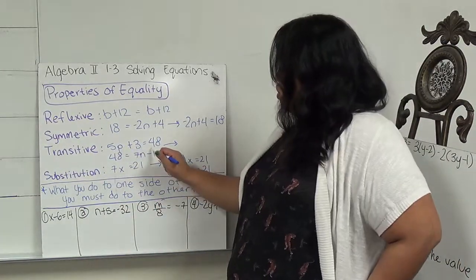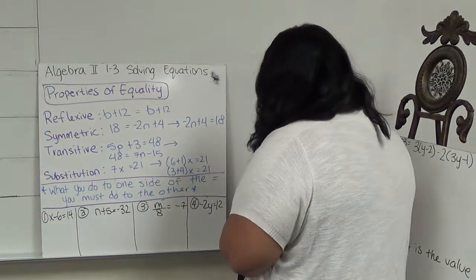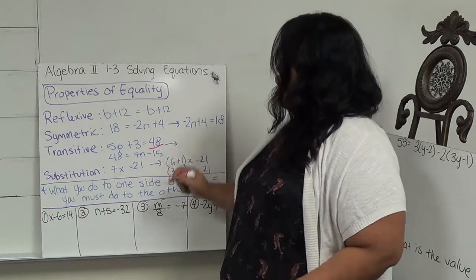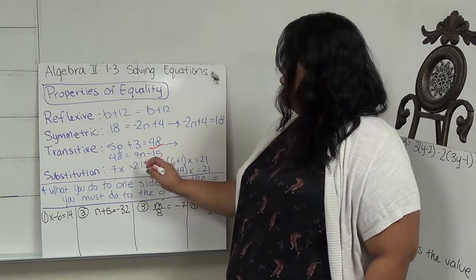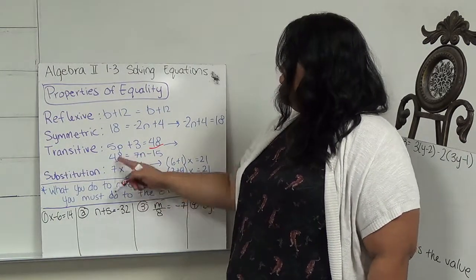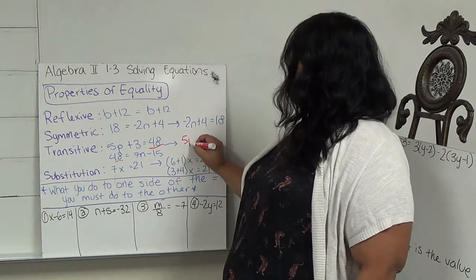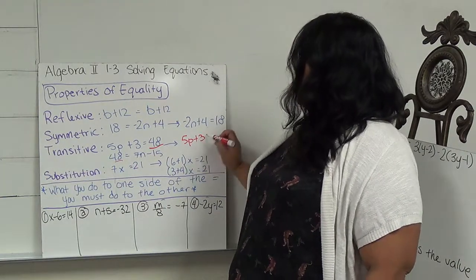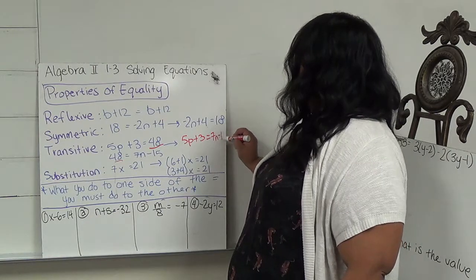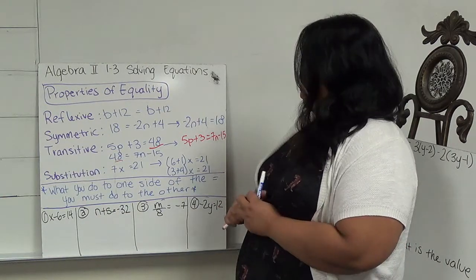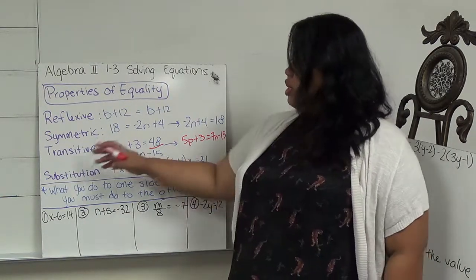So, 5p plus 3 equals 48. 48 also equals 7n minus 15. So because they both equal 48, I can assume that 5p plus 3 equals 7n minus 15. That's called the transitive property.